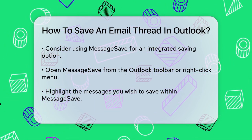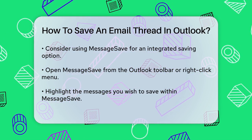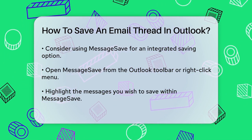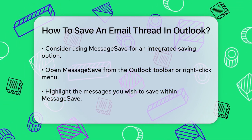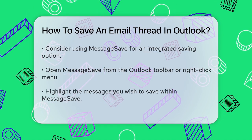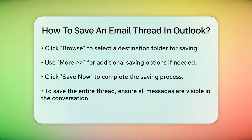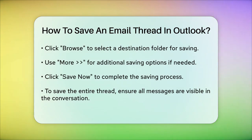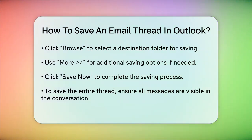If you're having trouble saving more than a few conversations in the thread, try this. Ensure that the entire thread is visible by clicking on the very top or the very bottom response in the thread. If everyone in the thread has included the previous messages at the bottom of their replies, the last message should contain the entire thread. You can then save this last message using the Save As method or MessageSave.